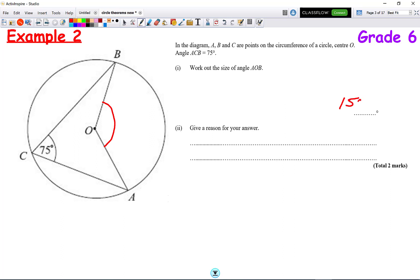So, we can write down 150 degrees, and therefore, we can state our reason, which is the angle at the centre is twice the angle at the circumference.